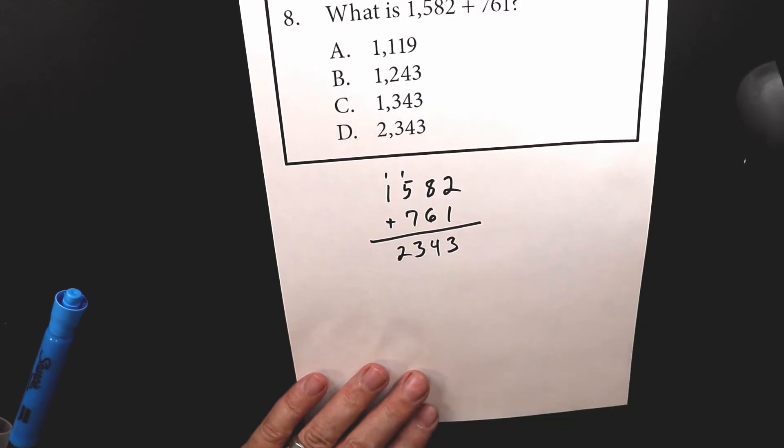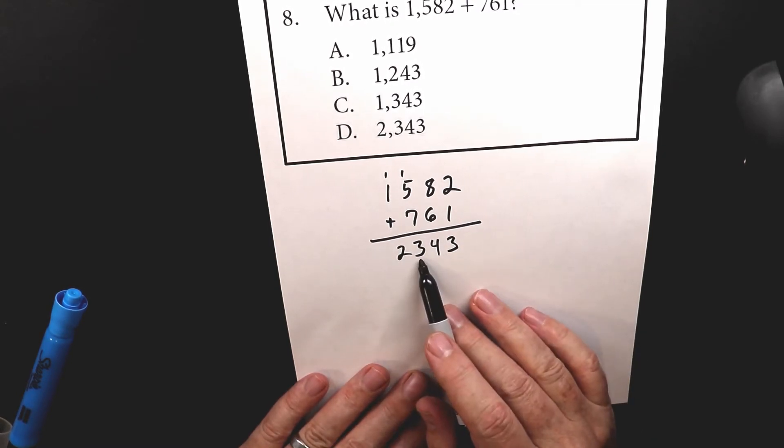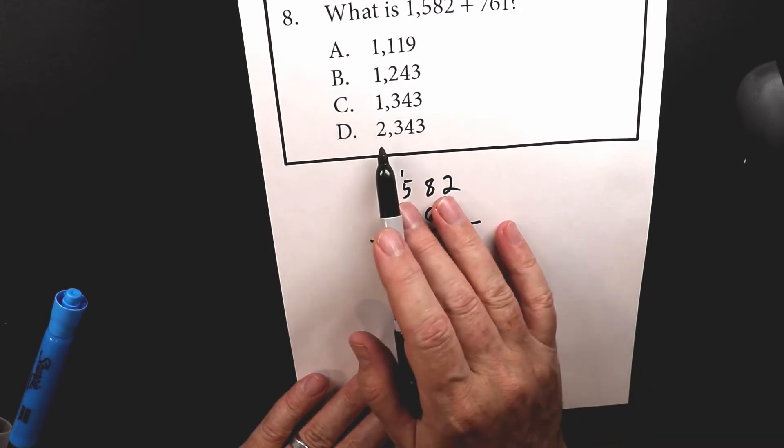We add the 1 to the top, and there's our number, 2, 3, 4, 3, which is the bottom one.